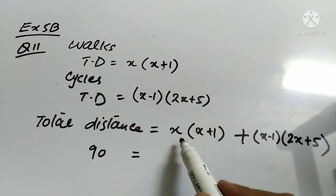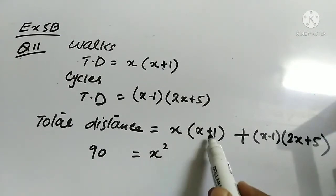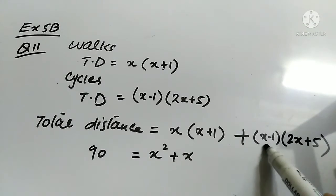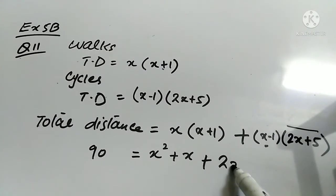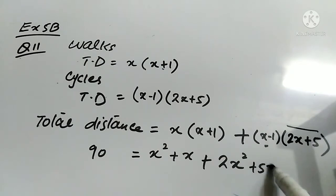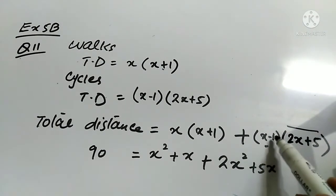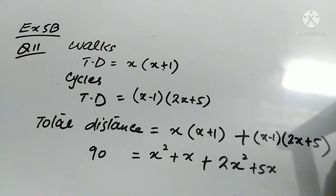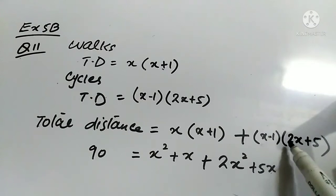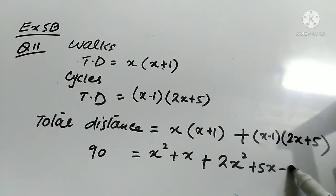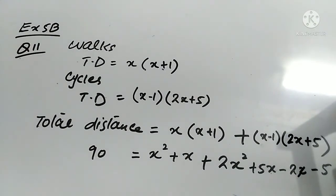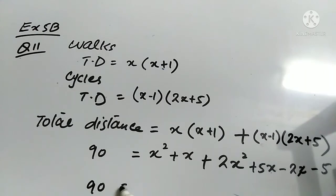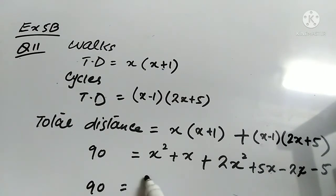Now we expand: multiply x by x to get x², and x by 1 to get +x. Then expand (2x + 5)(x − 1): multiply 2x by x to get 2x², and 2x by 5 to get 5x. Then multiply −1 by 2x and −1 by 5, remembering to multiply signs: −1 × 2x = −2x and −1 × 5 = −5. So: 90 = x² + x + 2x² + 5x − 2x − 5. Combining x² and 2x² gives 3x².